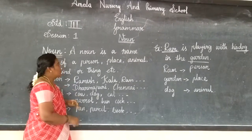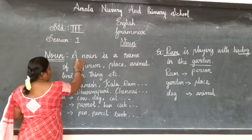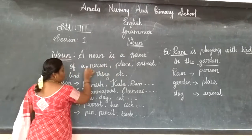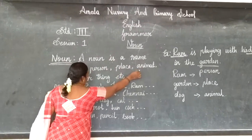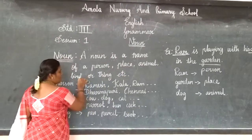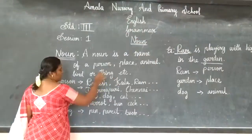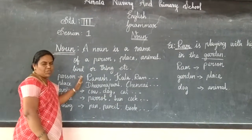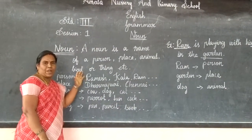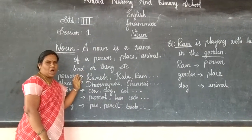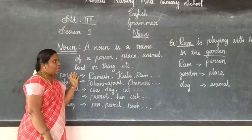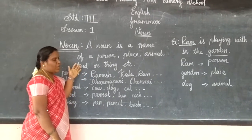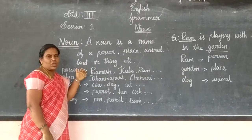Are you clear, children? A noun is the name of a person, place, animal, bird, or thing etc. In this day, we have to practice in your house. Next class, we will see the topic. The topic is verb.